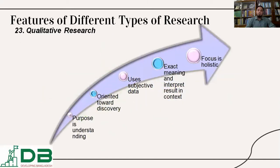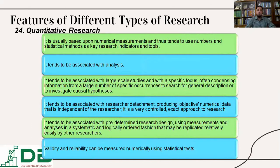Qualitative research aims to understand the subject, give data extra meaning, and focus on particular issues holistically. Quantitative data is usually based upon numerical measurements and uses statistical methods as research indicators and tools.